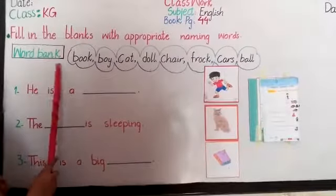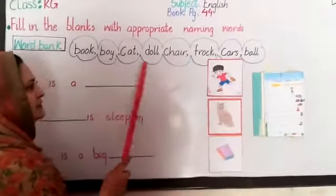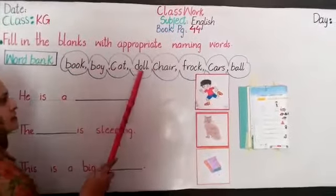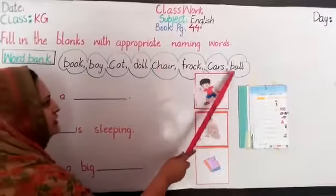We have also word bank. Yaani ka boho se mahi pa naming words hai. Inme se aapne select karna hai. Read with me. Book, boy, cats, doll, chair, frog, cars at mall.